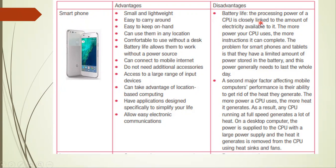Looking at the disadvantages, the battery life is a key concern. The processing power of a CPU is closely linked to the amount of electricity available to it. The more power your CPU uses, the more instructions it can complete. The problem with smartphones and tablets is that they have a limited amount of power stored in the battery, which limits CPU power.